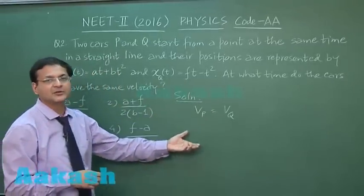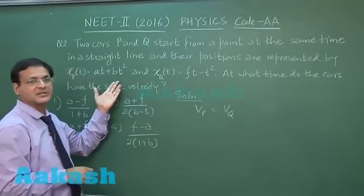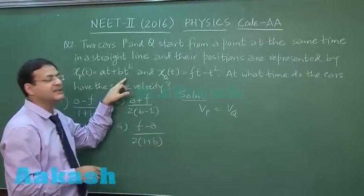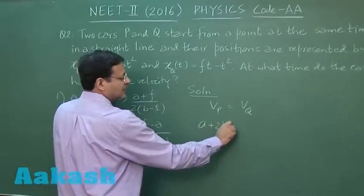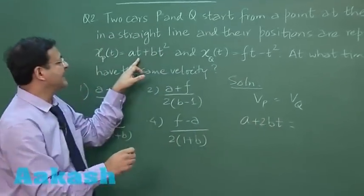Now how will you get the velocity of P? Simply by differentiating this expression. If you differentiate at plus bt square, what do you get? You get a plus 2bt. You get at is a, bt square is 2bt.